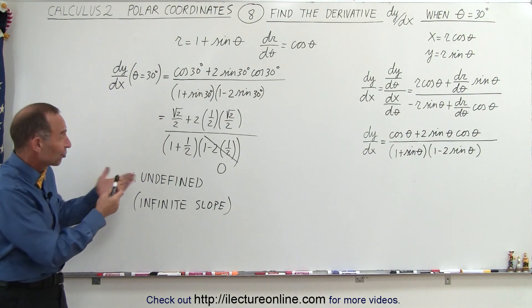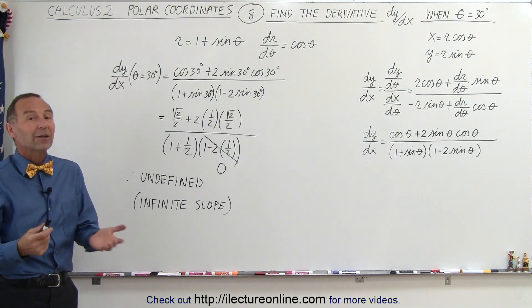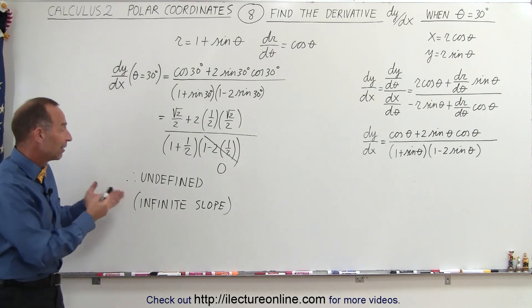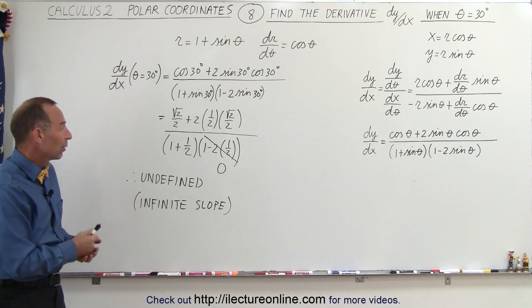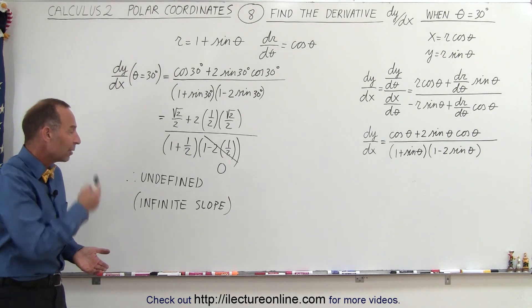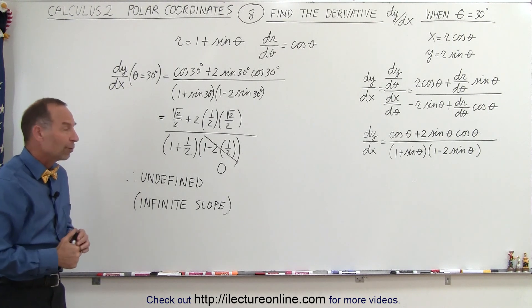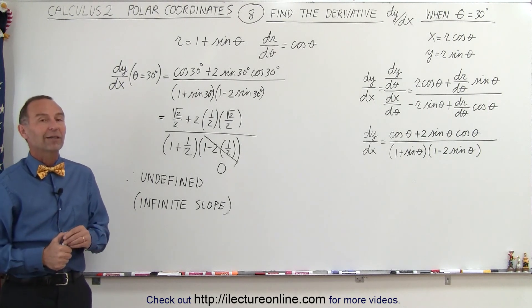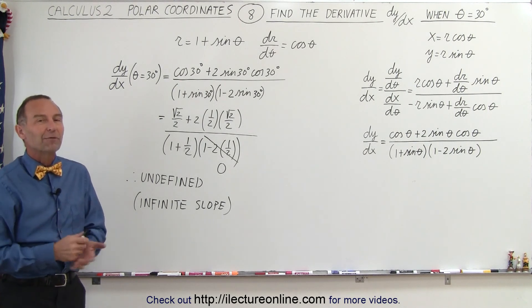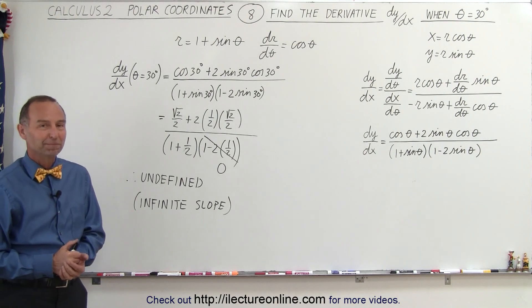So, even though we have a strange result, it's a perfectly valid result. It tells us that when the angle is 30 degrees, the slope is straight up and down — we have an infinite slope because the derivative is undefined at that point. And that's how it's done.